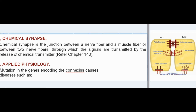Chemical synapse: A chemical synapse is the junction between a nerve fiber and a muscle fiber, or between two nerve fibers, through which signals are transmitted by the release of a chemical transmitter.